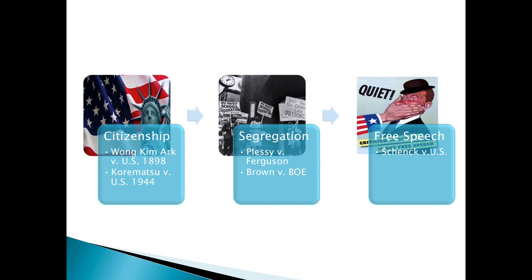But what if you were born in America and certain things happen — like a war — can the government deprive you of certain citizenship rights? That's Korematsu v. United States, 1944. Korematsu was of Japanese descent. After Pearl Harbor in 1941, President FDR issued an executive order rounding up all Japanese Americans and placing them in internment camps out west — mostly California but also places like Arizona. Korematsu sued, arguing his rights as an American citizen. The courts ruled against him, saying that because of the nature of the war, the government had a right to protect the majority of citizens. Many decades later, the courts realized this was wrong, and an apology was issued to Korematsu and all surviving members who lived in those internment camps during World War II.